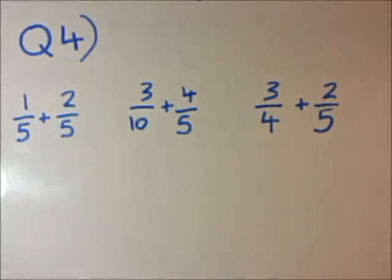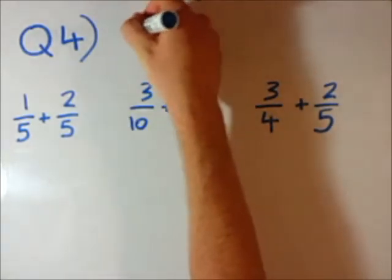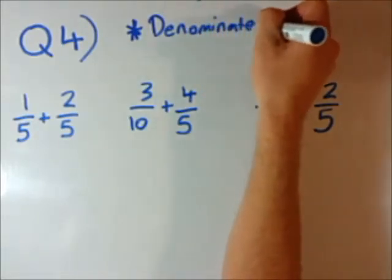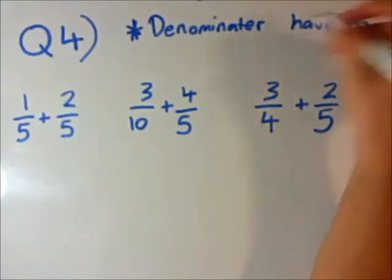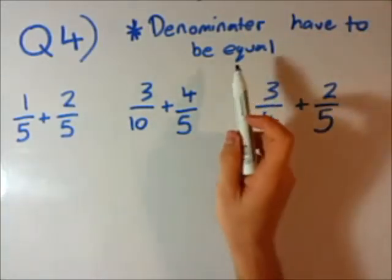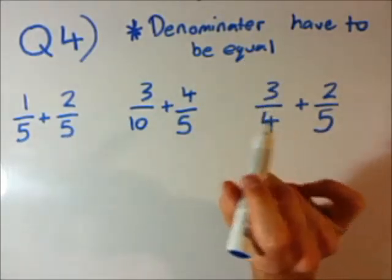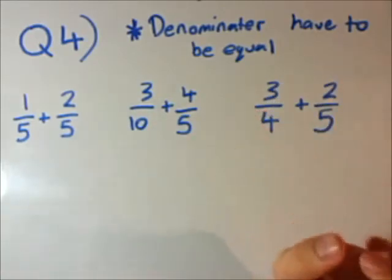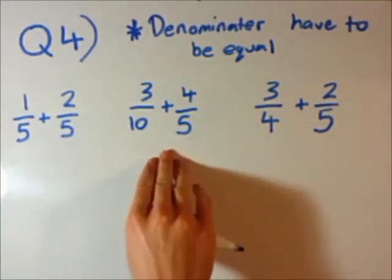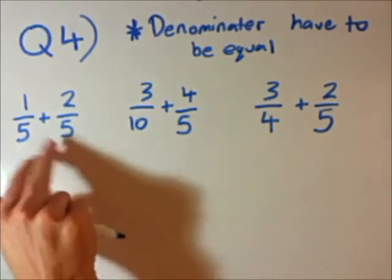Question 4. This is the first time we're adding fractions. The next question is subtracting fractions, and they both rely on one big golden rule. The golden rule is the bottom line, or the denominator, has to be equal or the same. If your denominator is the same in the fractions you're adding, all you then do is add the top. You don't add the bottom. If your bottom line is the same — for example, 5 and 5 — you just get to add the top two numbers.